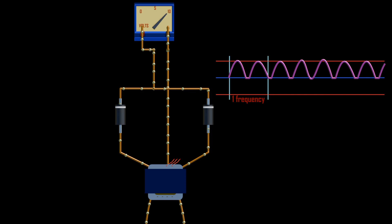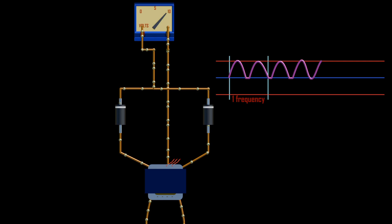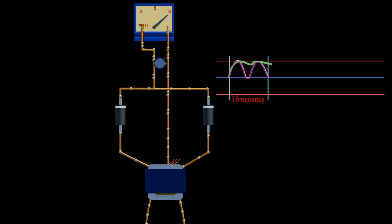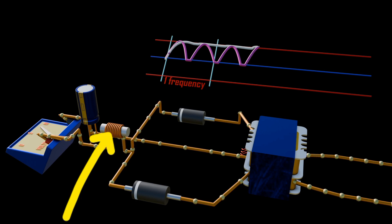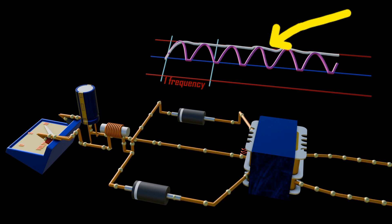We will receive pulsating DC with positive half cycles alone, such that the frequency of the output will be 120 Hz instead of 60 Hz, and 100 Hz instead of 50 Hz. When we add filtering capacitors, the output will be a more improved DC with less ripples. Adding an inductor to such a circuit would reduce the ripples even further to form a pure DC output.